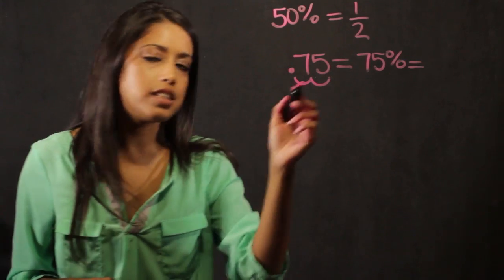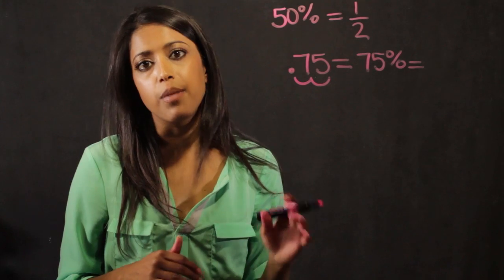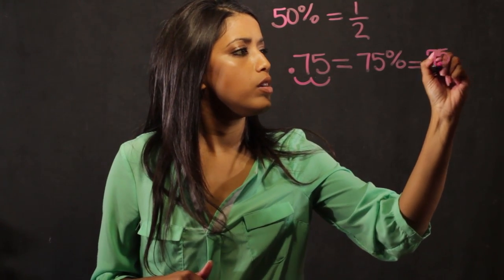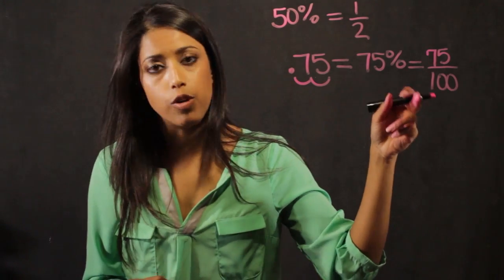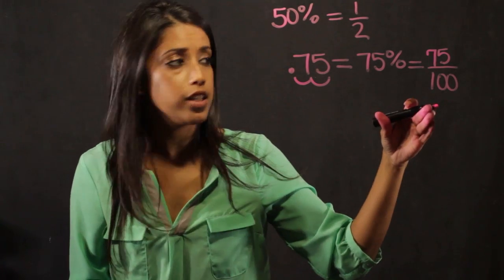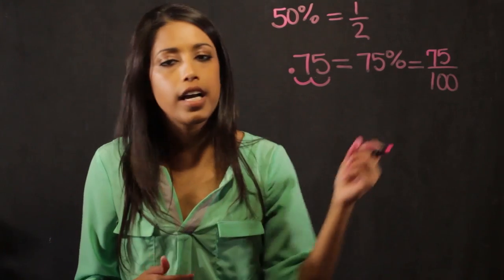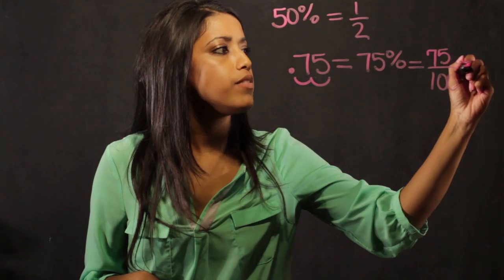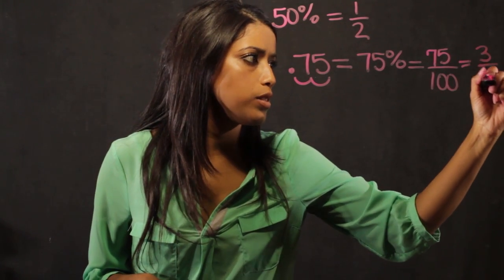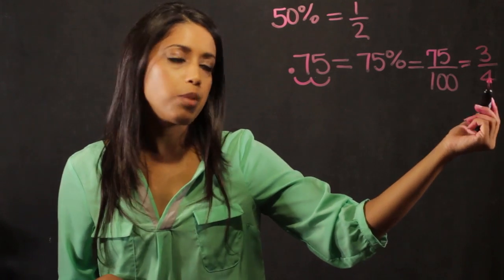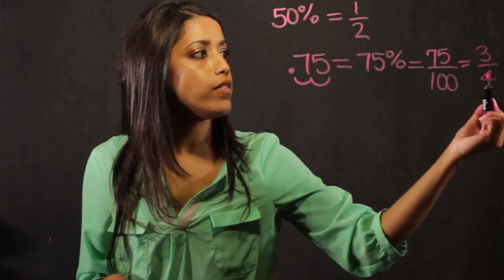Now, if I want to take this number and convert it to a fraction, what I do is I take the original number, 75, and I put it over 100. This is a correct fraction, but it's not in reduced form. So if I want to reduce the fraction, what I do is I look at the numbers and I say what numbers do they have in common. 75 is divisible by 25. It goes into 75 three times. 25 goes into 100 four times. So the fraction that represents 75% and also .75 is 3 fourths.